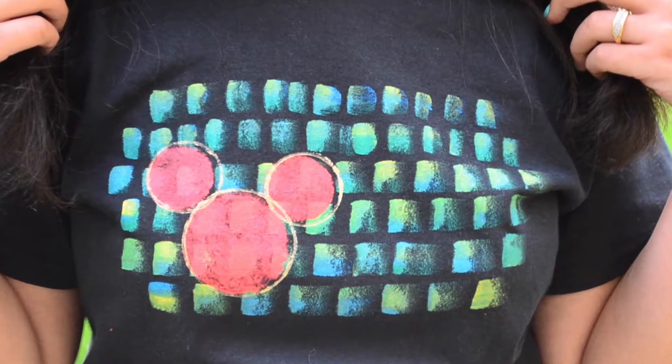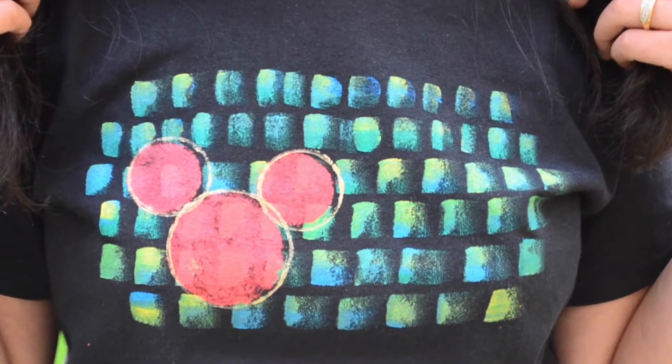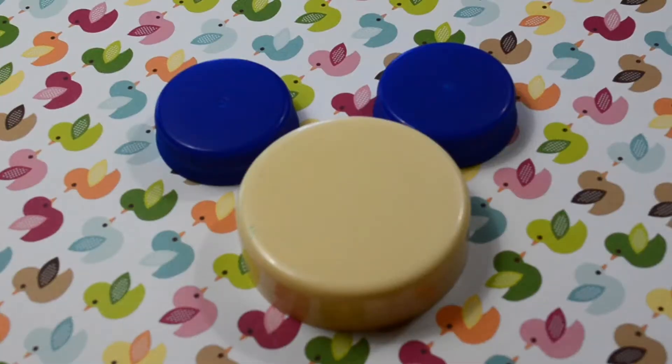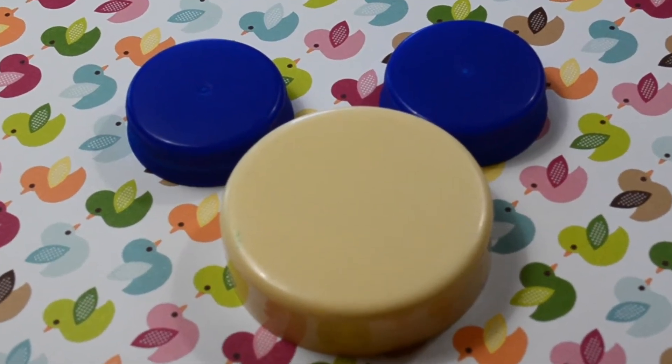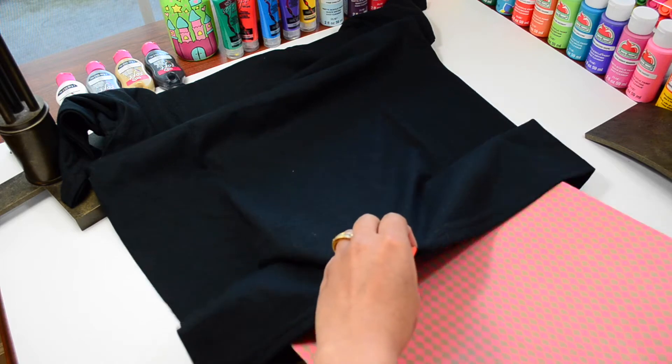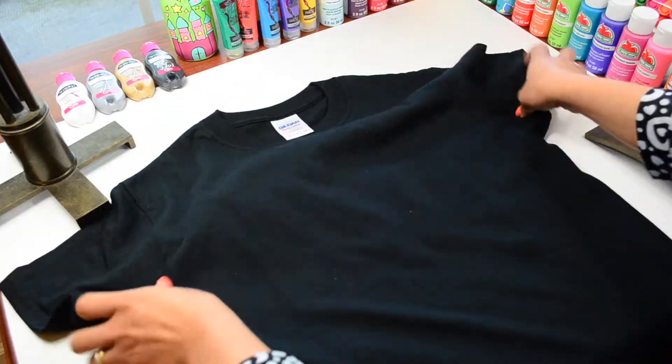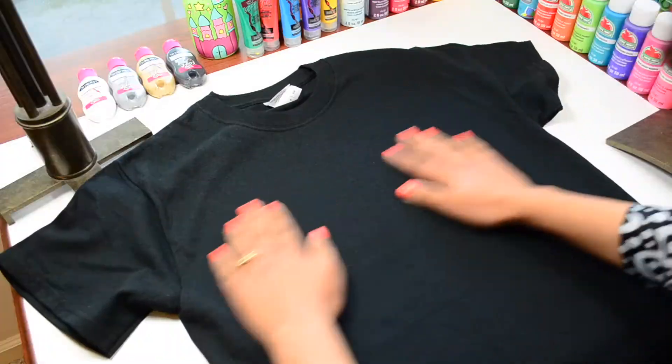So, let's get started. For making this cute Mickey t-shirt, we will need fabric colors, paint brushes and two different sizes of bottle caps or lid. Insert a cardboard or a cardstock paper inside the t-shirt because sometimes the paint does seep through the layers and this will protect it.